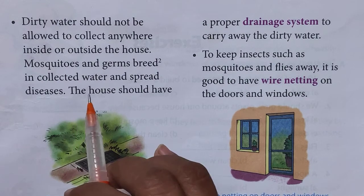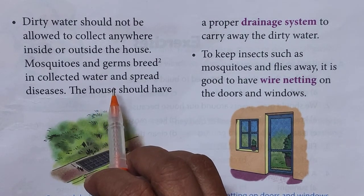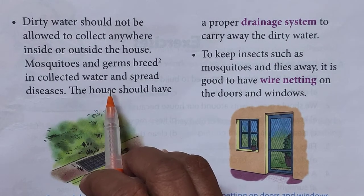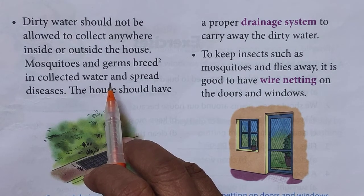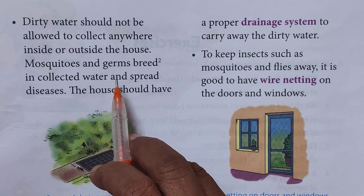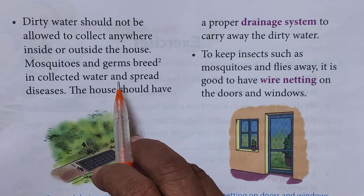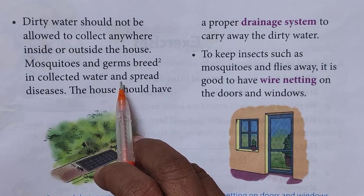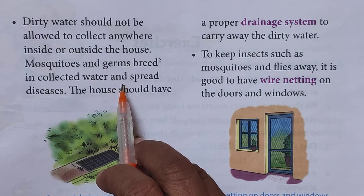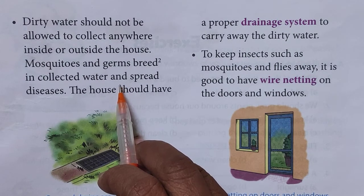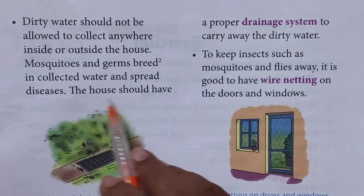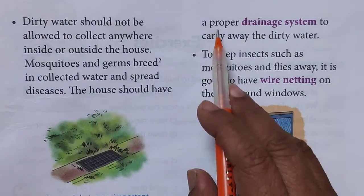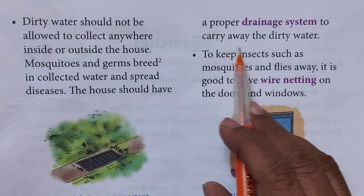If you observe stagnant water around the house very closely, mosquitoes will be laying eggs in it. They hatch into larvae and grow into mosquitoes which carry diseases like malaria and dengue. So the house should have a proper drainage system to carry away dirty water.